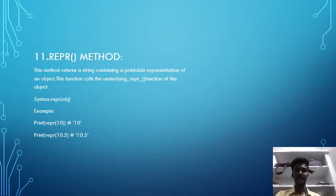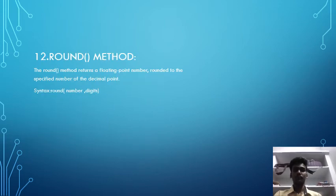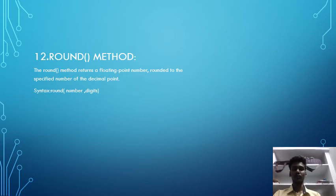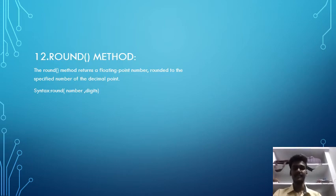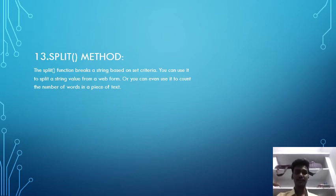The eleventh one is repr() method. This method returns a string containing a printable representation of an object. It calls the underlying __repr__() function of the object. The syntax is repr(object), and an example is given below. The twelfth one is round() method. The round() method returns a floating point number rounded to the specified number of decimal places. Its syntax is round(number, digits).